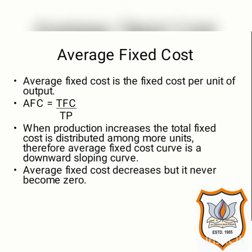First of all, talking about average fixed cost — average fixed cost is the fixed cost per unit of output. That means, in order to produce one unit, how much fixed cost has been incurred is said to be average fixed cost. The formula for finding average fixed cost is: AFC equals TFC upon TP, that means total fixed cost divided by total production. By dividing the total fixed cost by production units, we get average fixed cost.